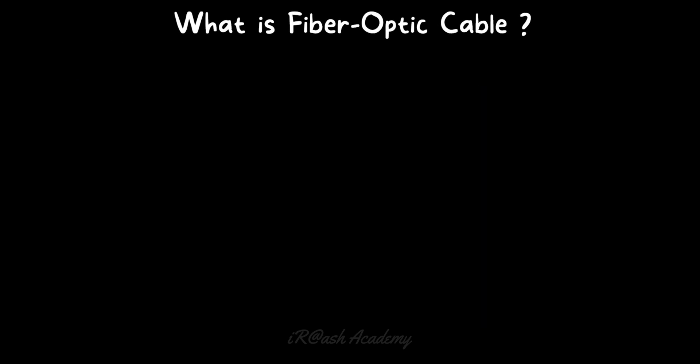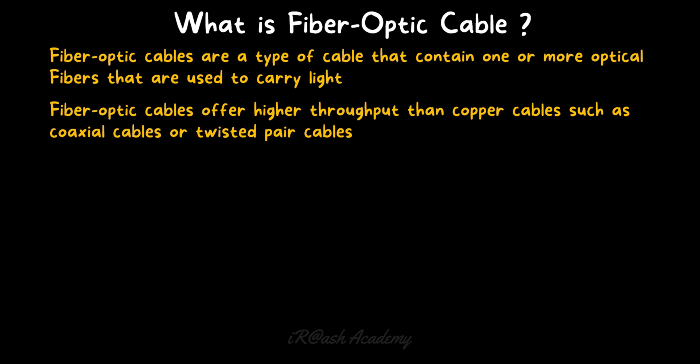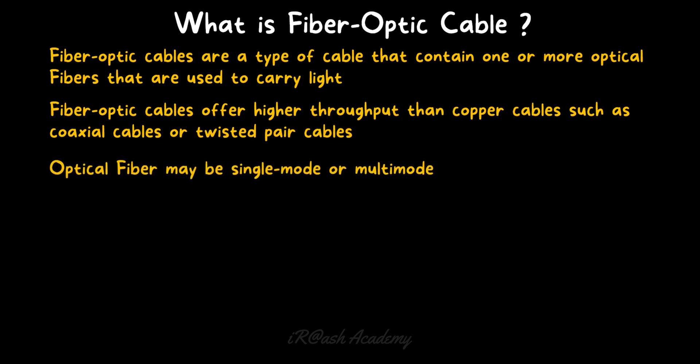So what is a fiber optic cable? Fiber optic cables are a type of cable that contain one or more optical fibers used to carry light. Fiber optic cables offer higher throughput than copper cables such as coaxial cables or twisted pair cables. Optical fiber may be single-mode or multi-mode — there are two types available — and the difference between them will be discussed later in this chapter.